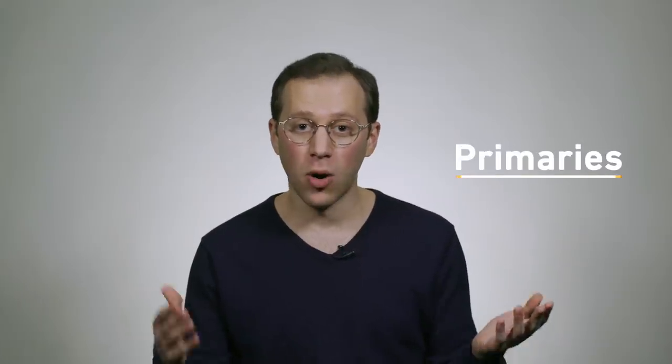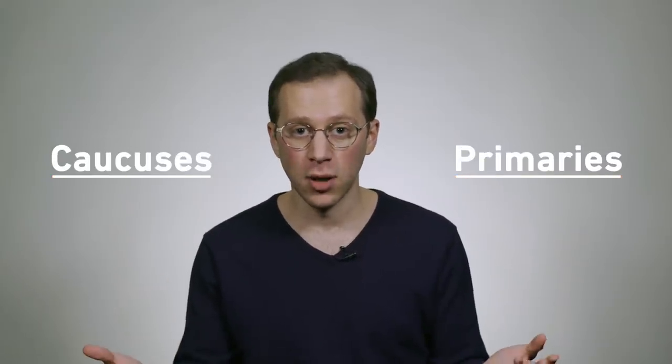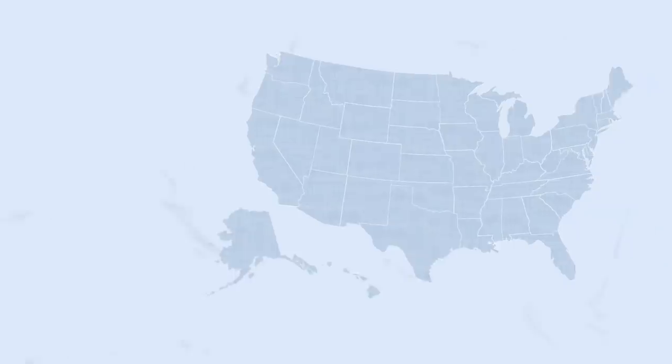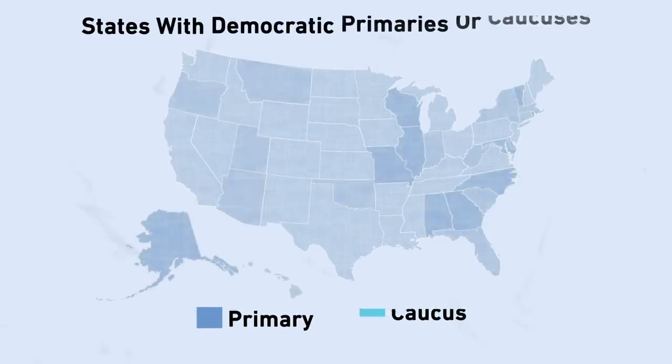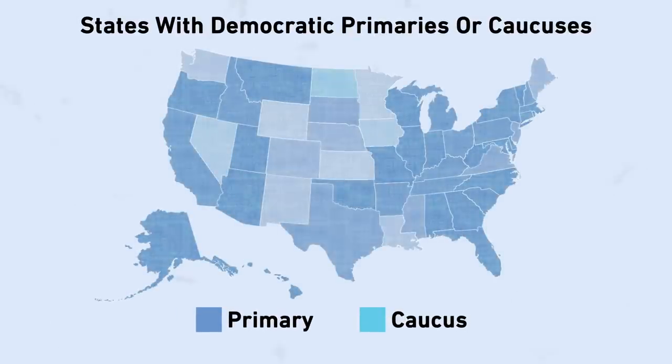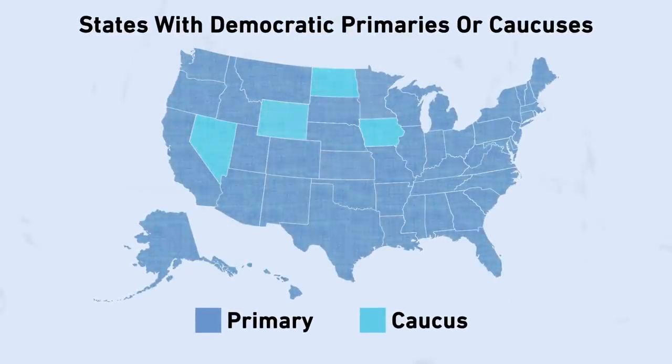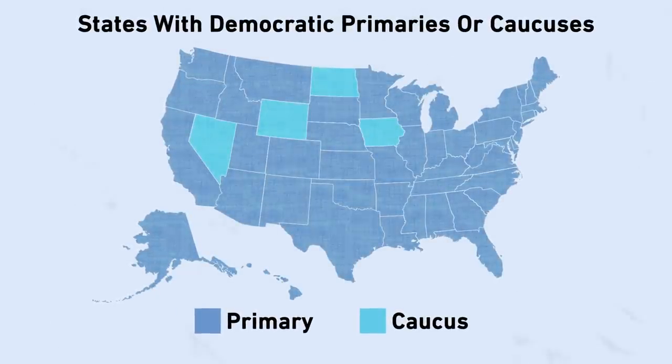There are two main ways that voters get to weigh in on who they want the presidential candidates to be: either primaries or caucuses. Overwhelmingly, states and territories in the US use primaries. Only a handful of states use caucuses.